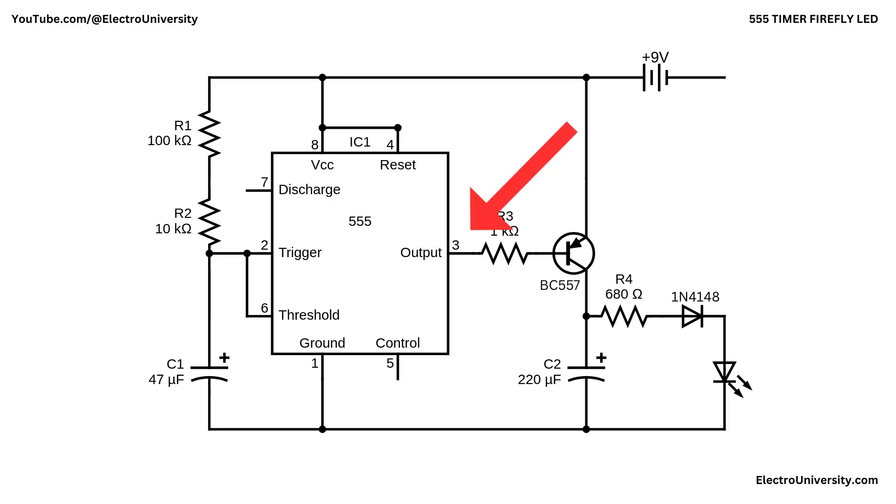When the 555 output goes high, the base rises close to the emitter voltage, the base current stops, and the transistor turns off, disconnecting the collector node from the supply. At the collector node, we have C2 connected from that node to ground, with its positive terminal at the node. This capacitor stores charge and controls how long the LED glows. Also connected to that node is R4, which then goes to the 1N4148 diode, and finally to the LED, whose other side is grounded.